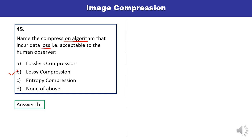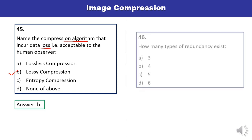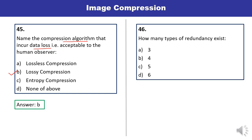Next and last question: How many types of redundancy exist? Options are 3, 4, 5, or 6. The correct answer is 4. You may recall all types: first is coding redundancy, second is interpixel redundancy, third is psycho-visual redundancy, and fourth is chromatic redundancy. It means the answer is 4 — option B is the correct one.